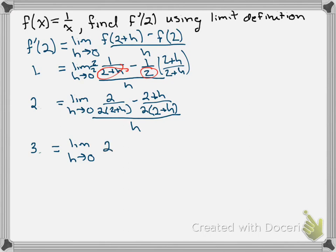So 2 minus the quantity 2 plus h, all over our common denominator which we have said is 2 times the quantity 2 plus h. And then that's all over this lone h on bottom. And there's the end of step 3.